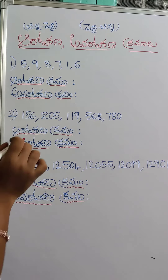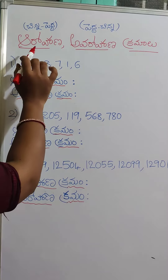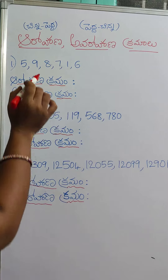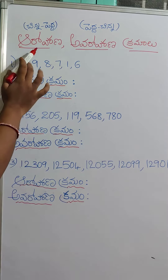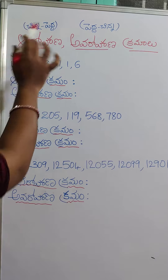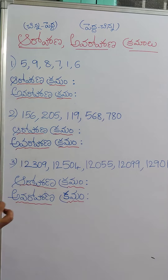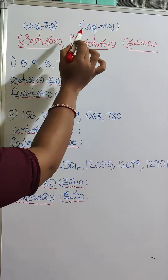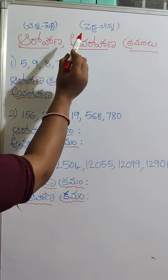Welcome to Like Learning Channel. Today I am going to learn a lot from Arohana Kram. Arohana Kramam is 5-5-5-5. Avarohana Kramam is 5-5-5.